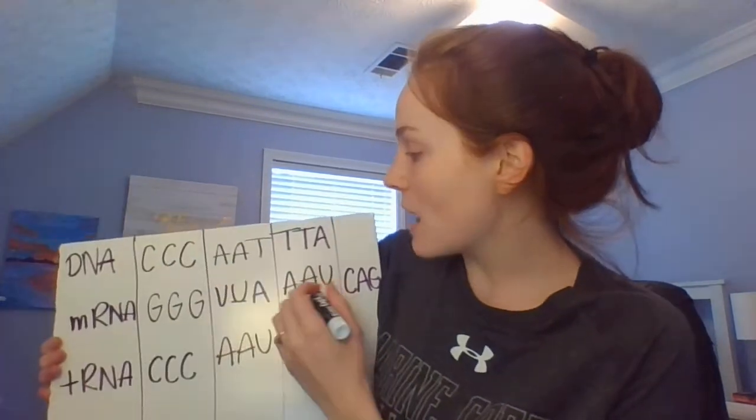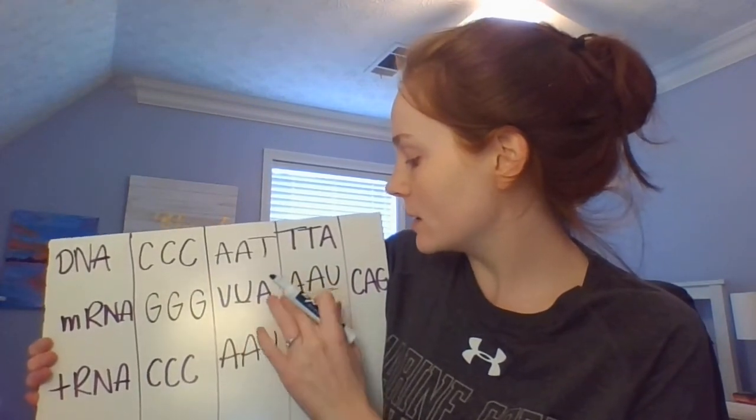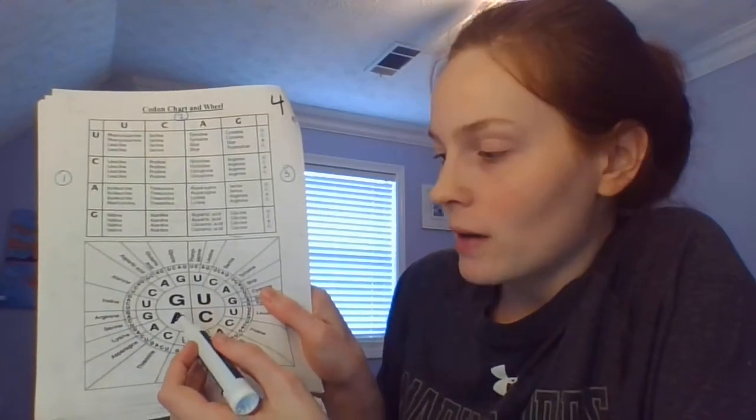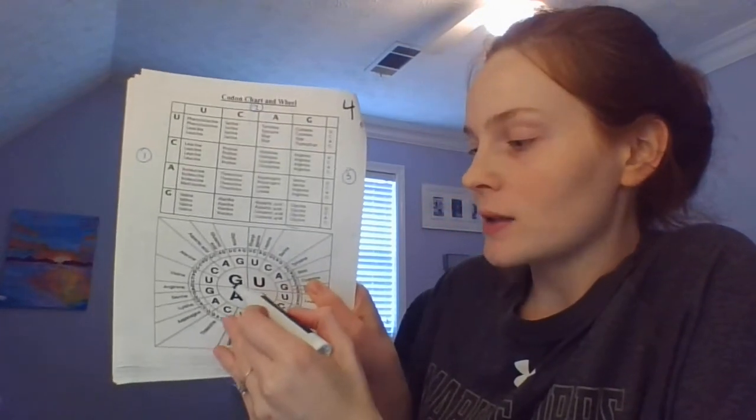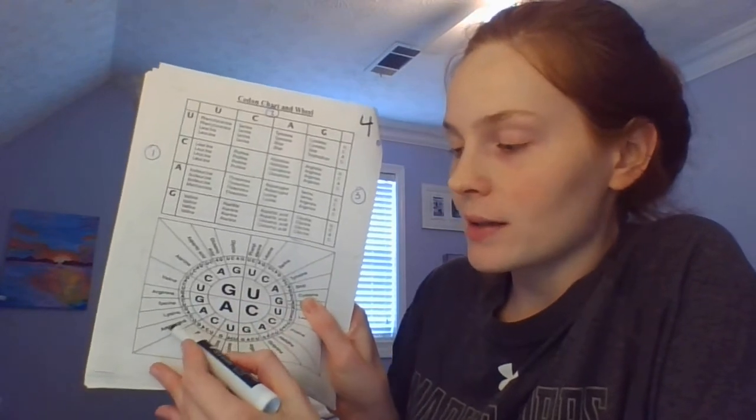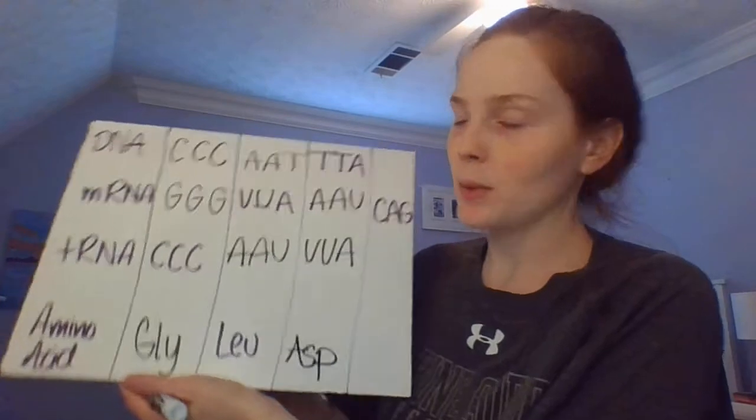The amino acid — you always have to use the mRNA codon to find it. So we're going to use AAU, and I'll do the codon wheel this time. You always start from the inside and work your way out. First base is A — it's somewhere in this square. Second base is A — that narrows it to either lysine or asparagine. Last base is U, so it is asparagine — ASN.